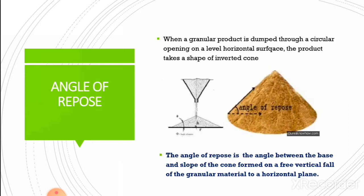The next frictional property is angle of repose, which is one of the important frictional properties of agricultural produce. This property plays an important role in the design of silos, bins, hoppers, and in order to calculate the lateral and longitudinal pressure imposed by grain on the structure. When a granular product is dumped through a circular opening onto a level horizontal surface, the product takes a shape of an inverted cone — it forms a pile or heap — as shown in the diagram where a heap of grain and its angle of repose are illustrated.